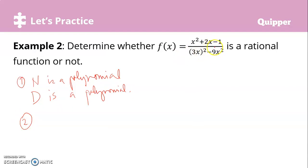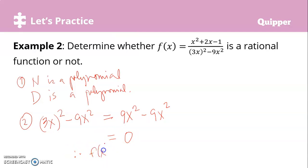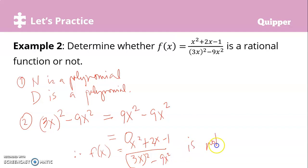Now for the second condition, we simplify the denominator and check if it equals 0. We have 3x^(2/3) — wait — 3x² minus 9x². Simplifying: 3 squared is 9, so 3x squared gives 9x squared. So the denominator becomes 9x² minus 9x², which equals 0. We fail the second condition. Therefore, f(x) = (x² + 2x - 1) / (3x² - 9x²) is not a rational function.